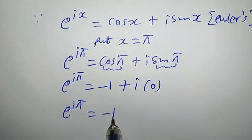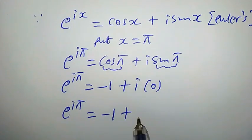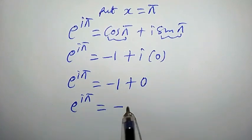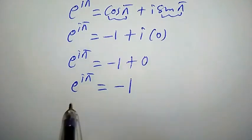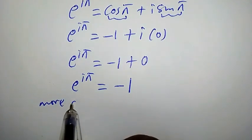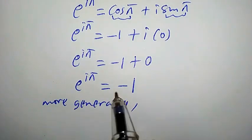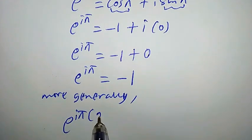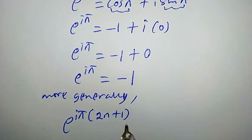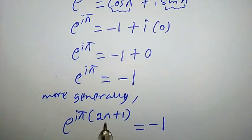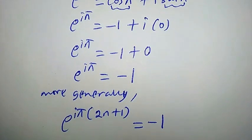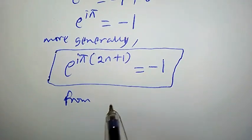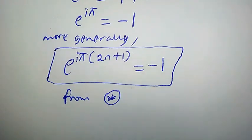So e^(iπ) = -1 + i·0 = -1. More generally, we can write this as e^(iπ(2n+1)) = -1, where n is any integer. Take note of this — it is very important.